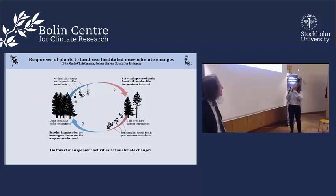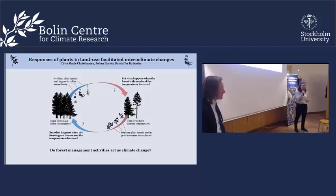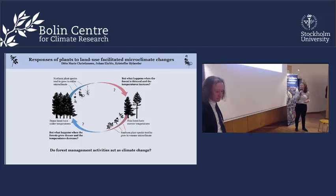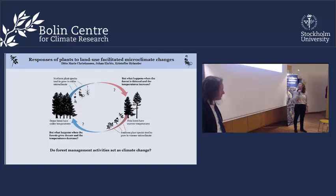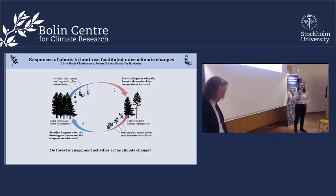Colder microclimates are coupled to dense forests. But the majority of forests in Sweden are managed. So what I ask is: what happens to these species populations and their composition in colder microclimates when we thin the forests and we see a temperature increase? The reverse you could ask for southern plants that tend to grow in warmer microclimates with more sparse vegetation — what happens when the forests grow denser and we see a temperature decrease? Come to my poster to read about my approach and whether forest management activities actually act as climate change.